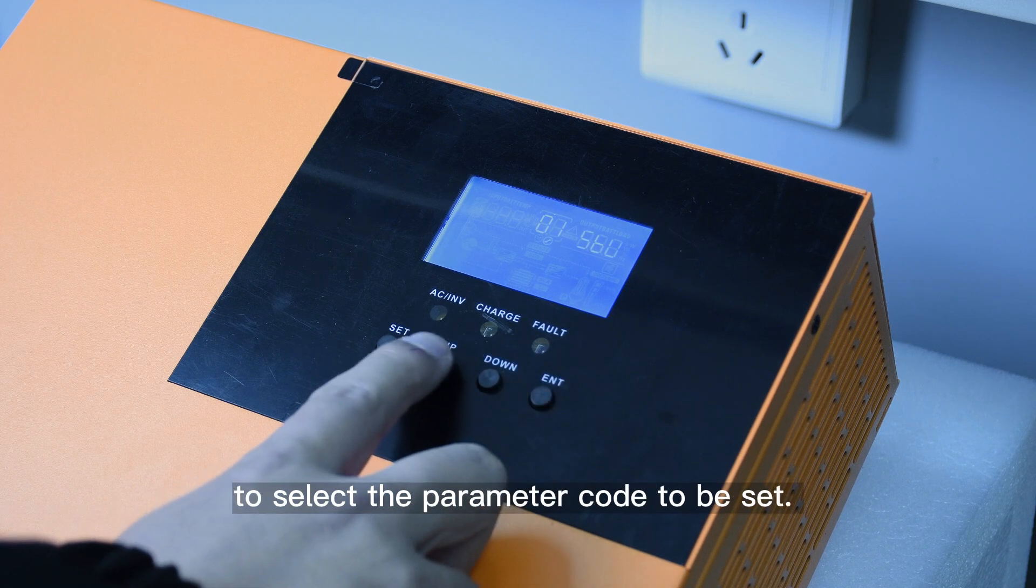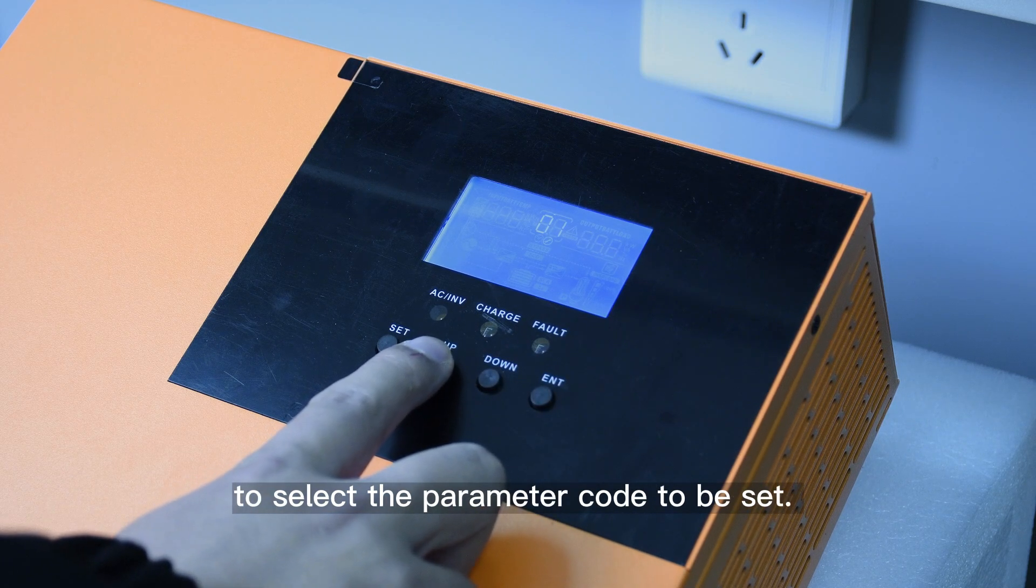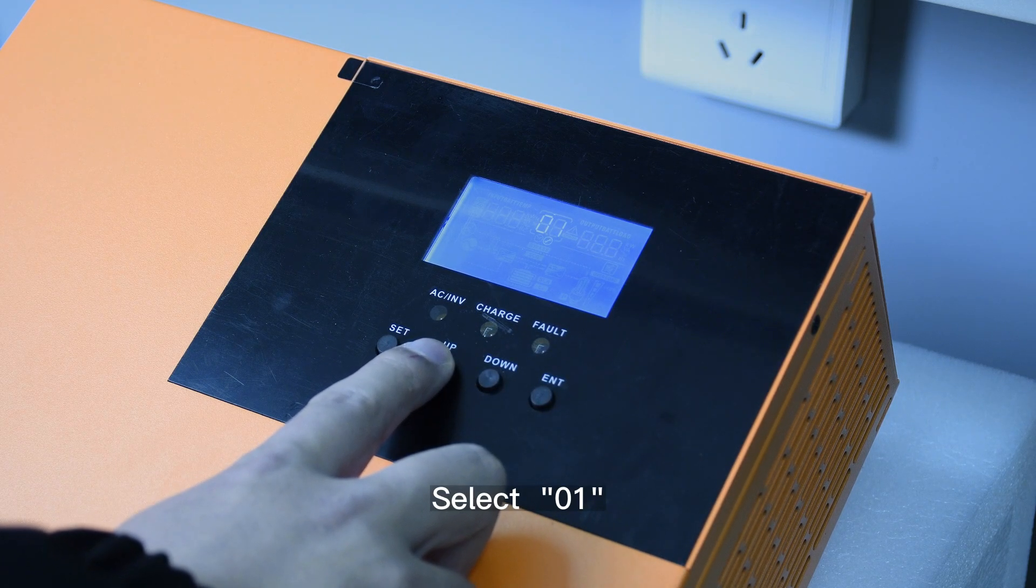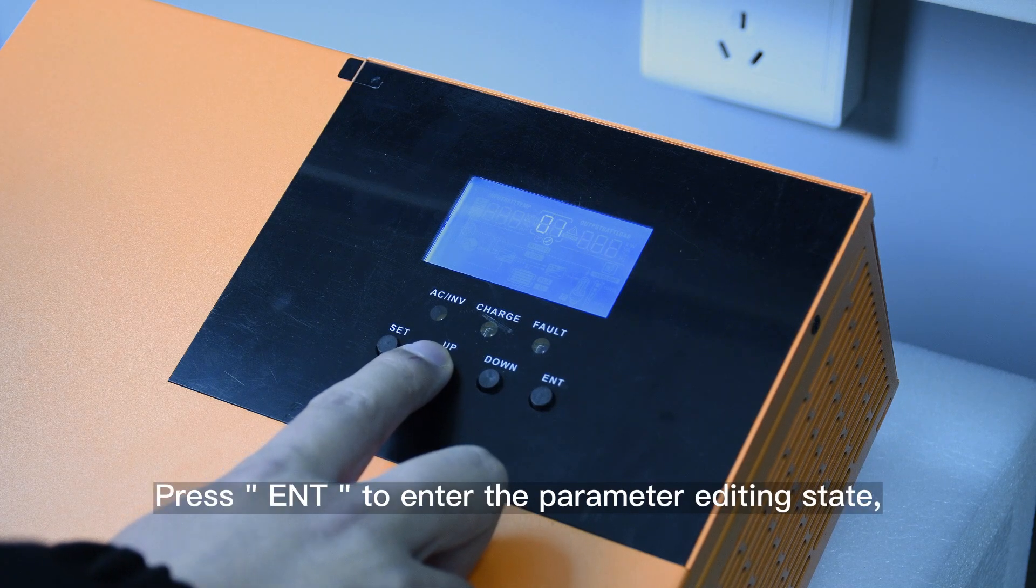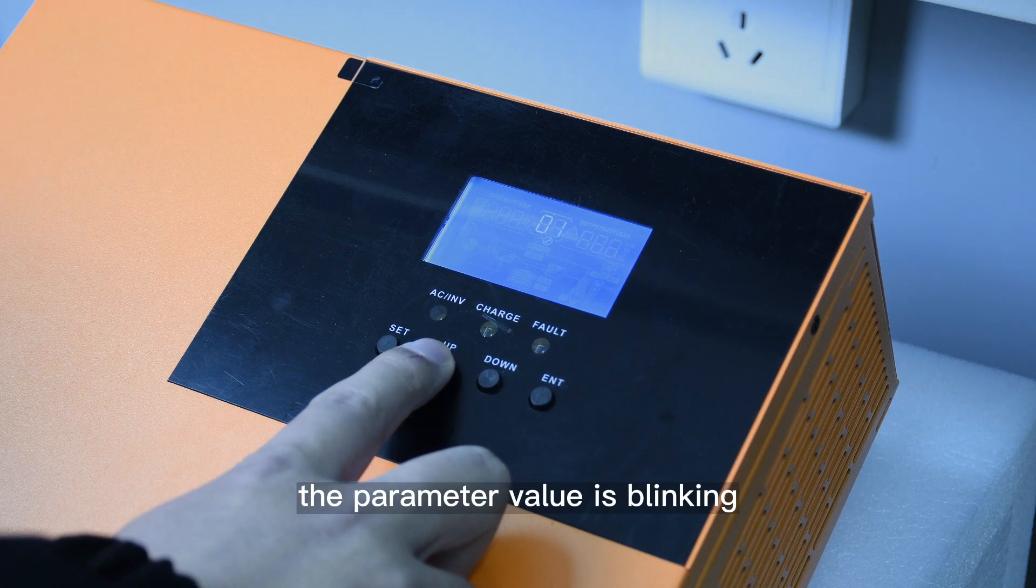Press the UP and DOWN keys to select the parameter code to be set. Select 1. Press Enter to enter the parameter editing state. The parameter value is blinking.